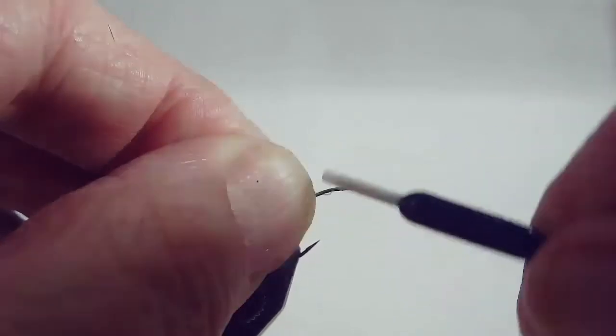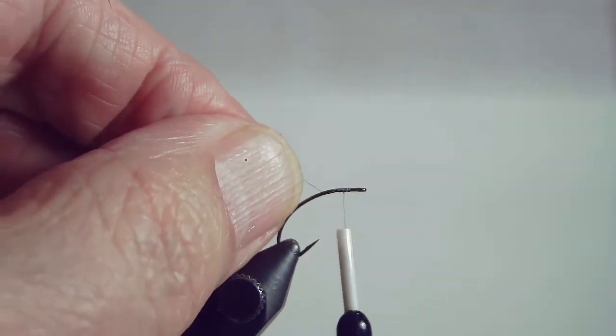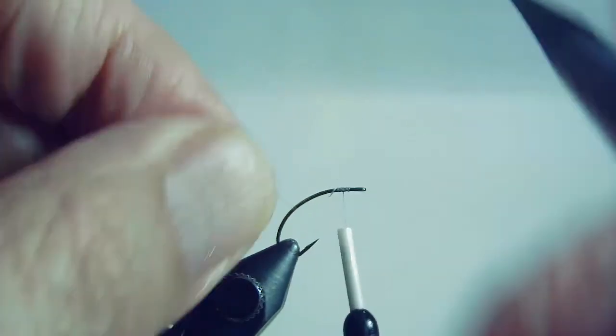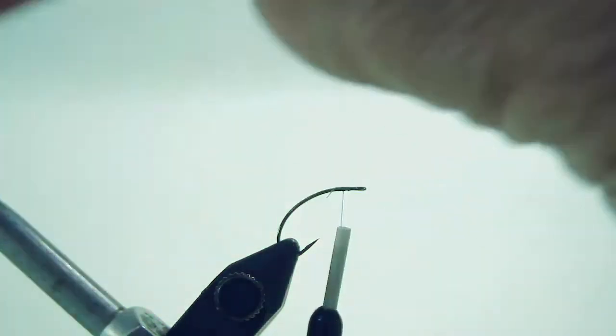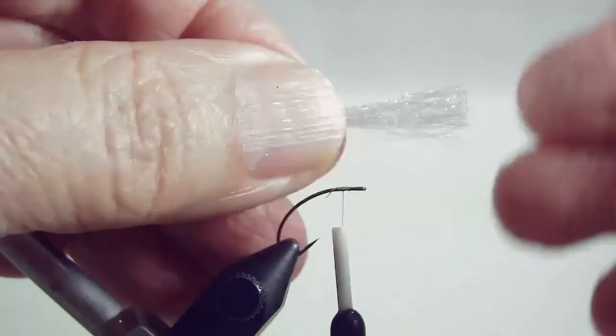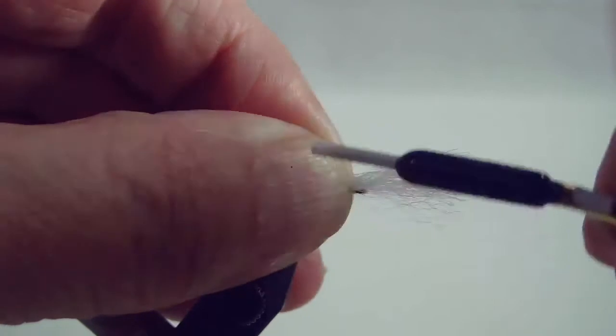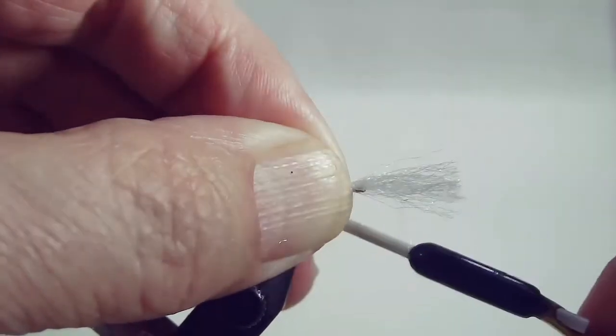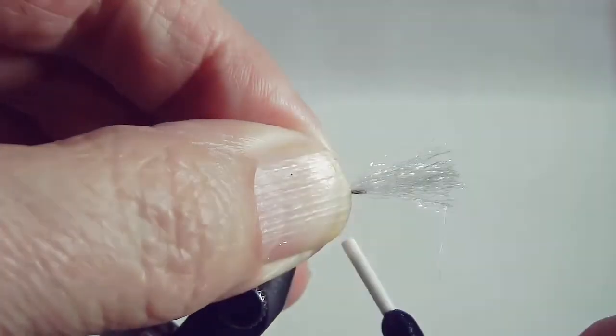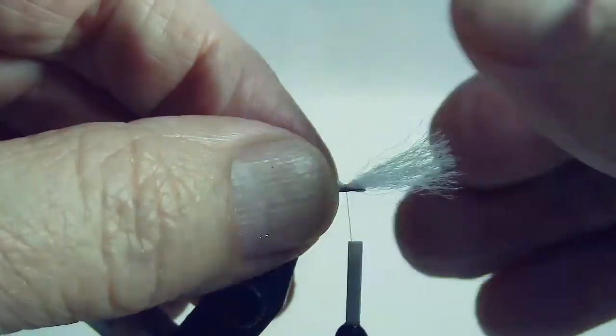So I'm going to secure some tying thread trim the excess and I'm going to start with some zelon and this is white zelon and I'm going to take a piece of that and it doesn't need to be very much I've got maybe a little over an inch here and I'm going to center it on the top of the shank and tie it down and this is going to end up becoming the wing post for the para Adams.